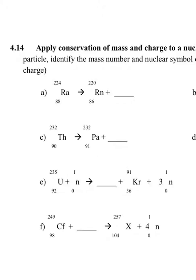So let's look at the first example. On the left-hand side, I have 224, and on the bottom, I have 88. And on the right-hand side right now, I have 220 and 86.